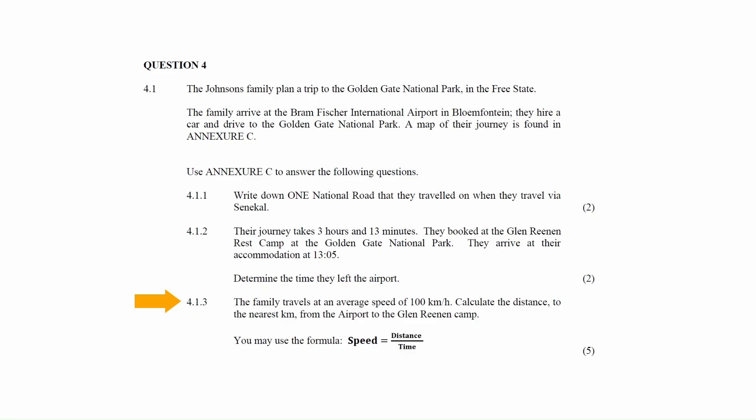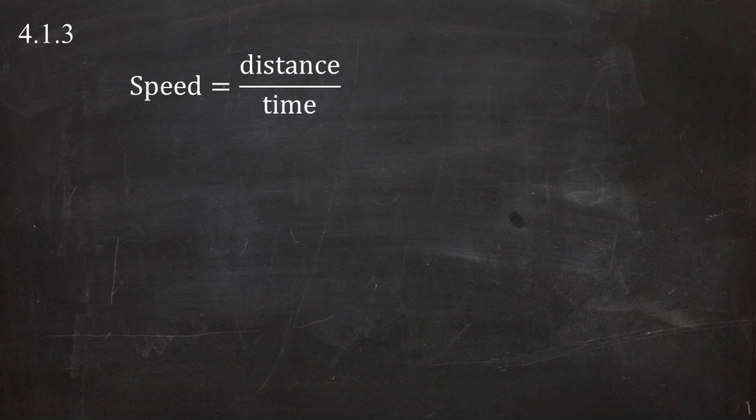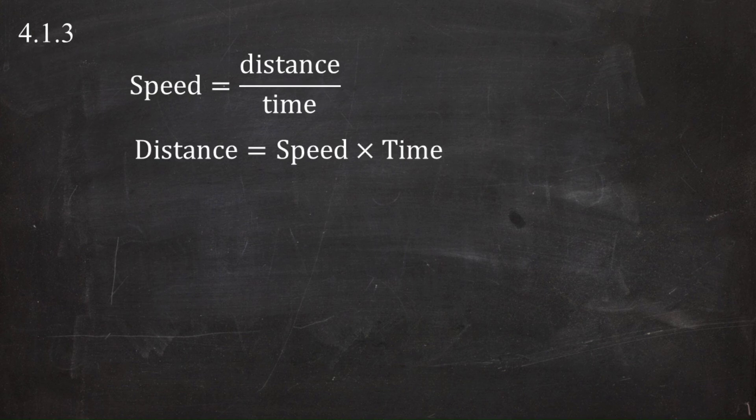In question 4.1.3, the family travels at an average speed of 100 km per hour. You will have to calculate the distance to the nearest kilometer from the airport to the Glen Renan Camp, using the formula speed equals distance divided by time. From that equation, we rearrange so that distance is the subject of the formula, giving us distance equals speed multiplied by time.